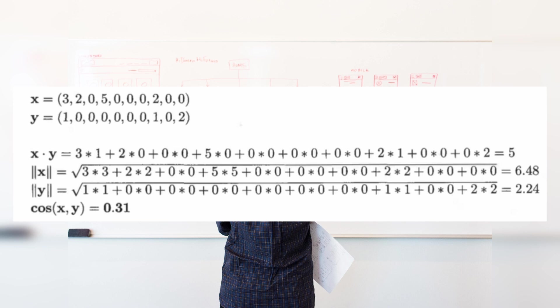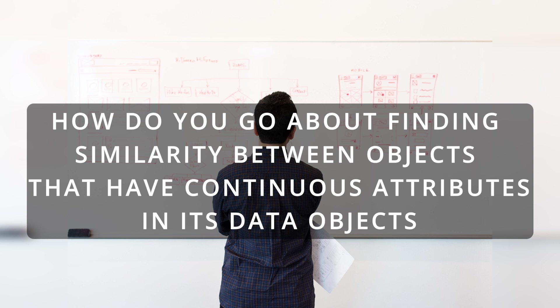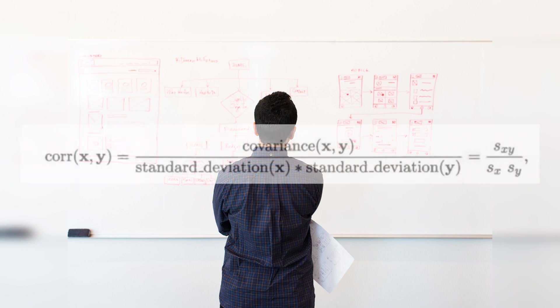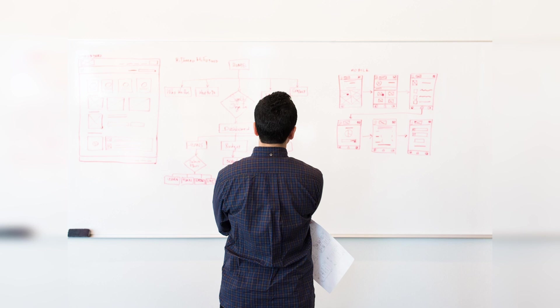You might be thinking: how do you find similarity between objects with continuous attributes? For that you can use correlation. Correlation measures the linear relationship between the attributes of objects with either binary or continuous variables. You can calculate correlation between two objects x and y using the formula on screen, which combines covariance and standard deviations — calculated as you can see on screen — using the same statistical definitions you already know.